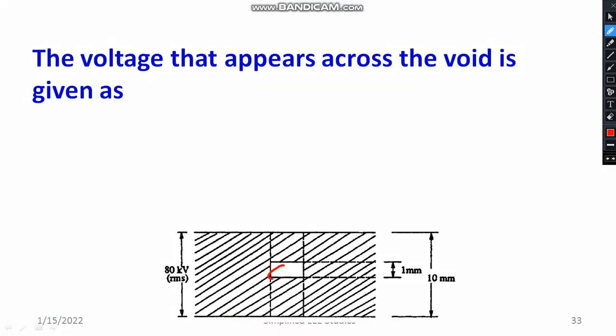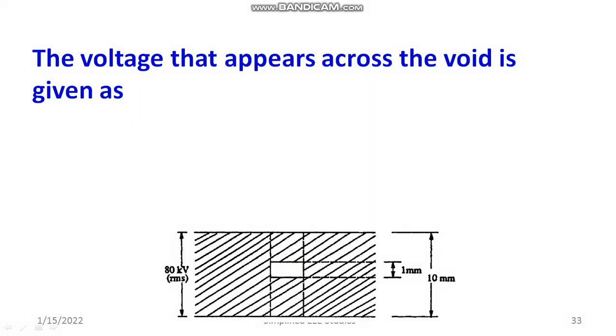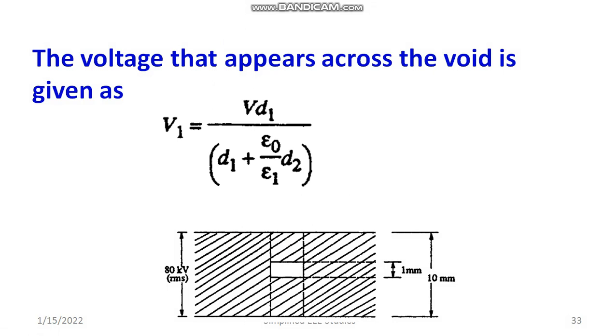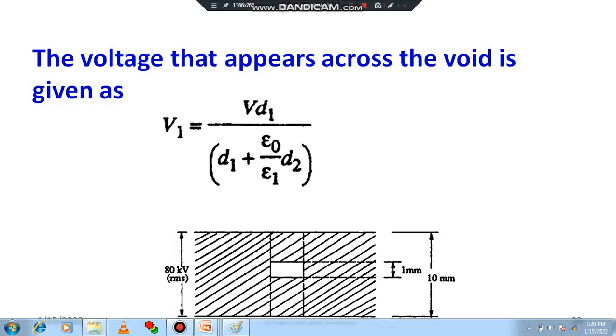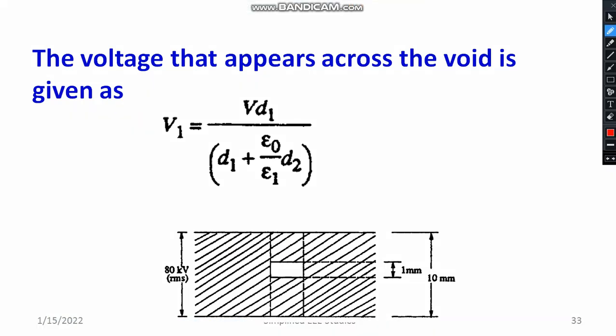Consider the void inside the dielectric medium, which is your solid dielectric material. The formula for voltage that appears across the void is: V1 = V·D1 divided by (D1 + (ε0/ε1)·D2), where D1 is the thickness of the void and D2 is the thickness of the solid dielectric material.